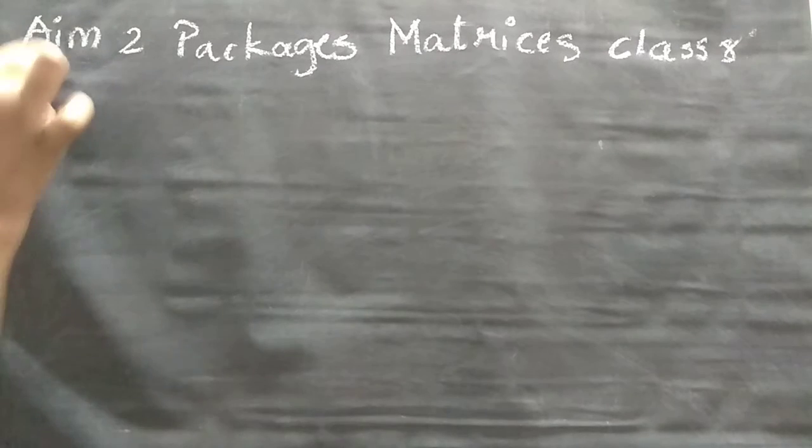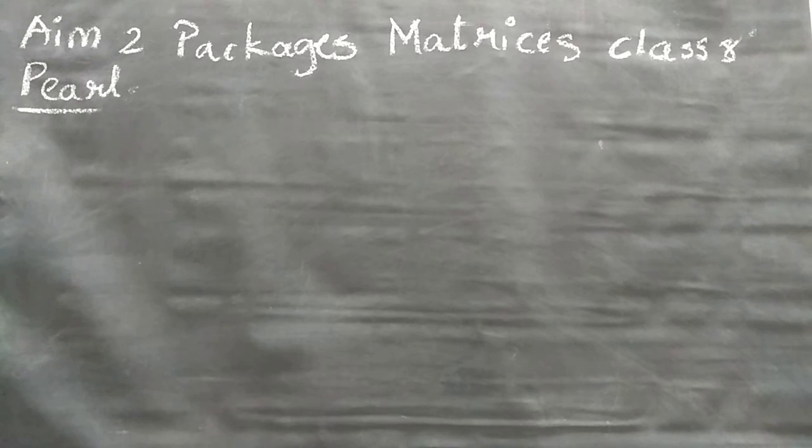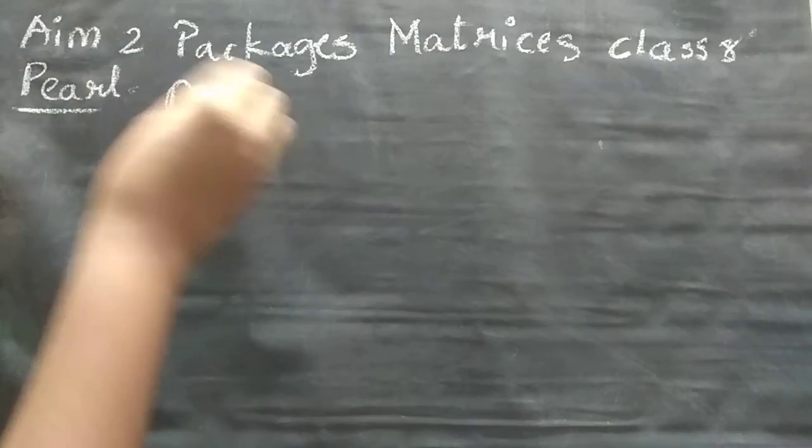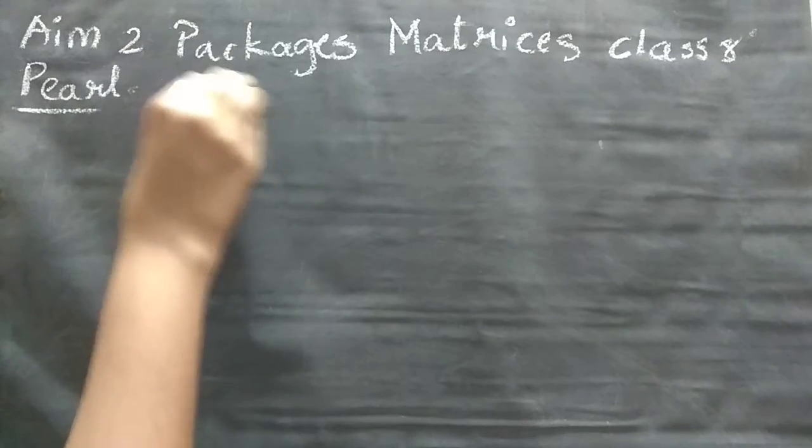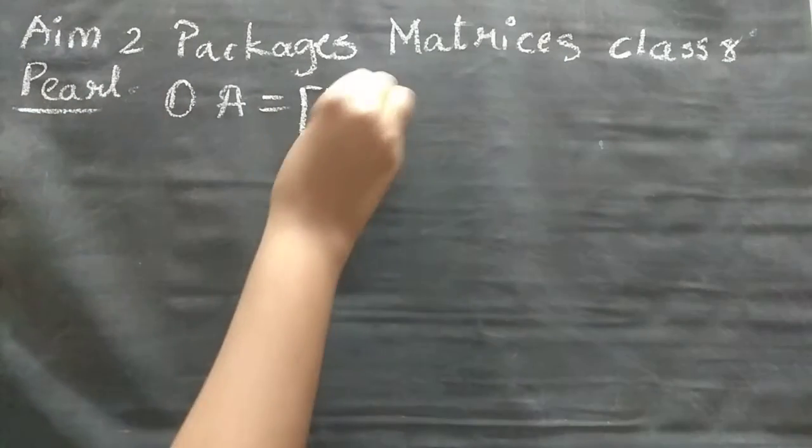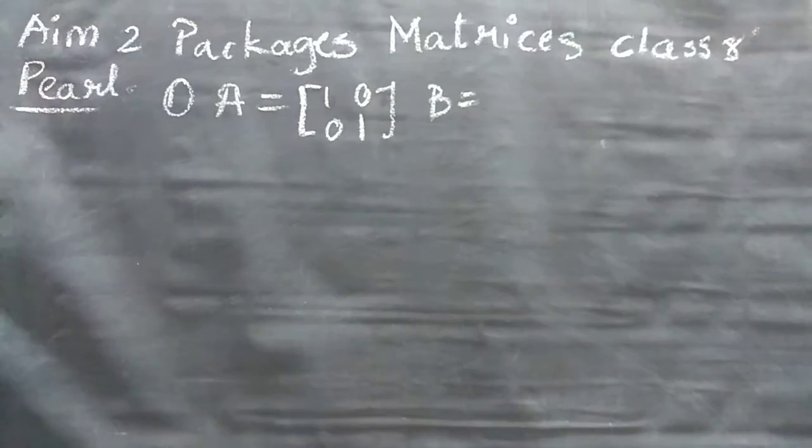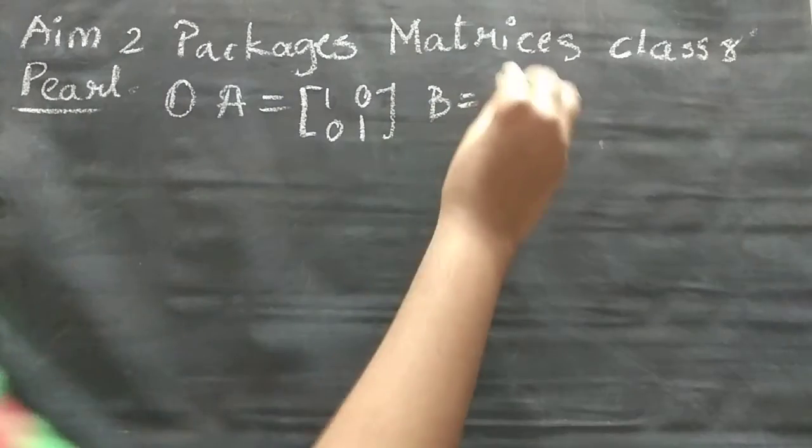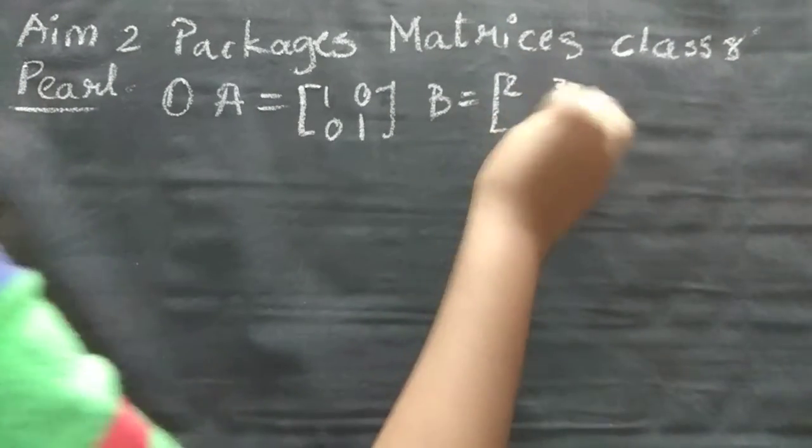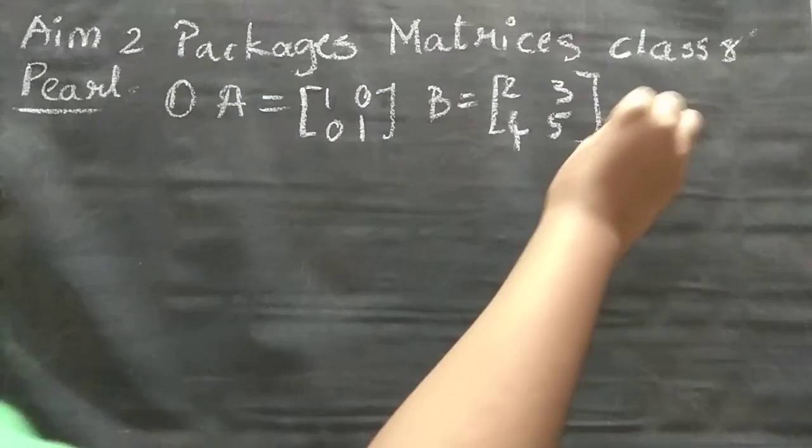So first we will start with Pearl package. First question is they have given two matrices. First one, A matrix that is [1, 0, 0, 1] and B matrix is [2, 3, 4, 5]. This is the question. What we have to find? We have to find AB.